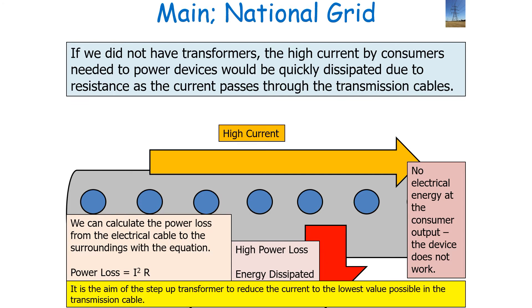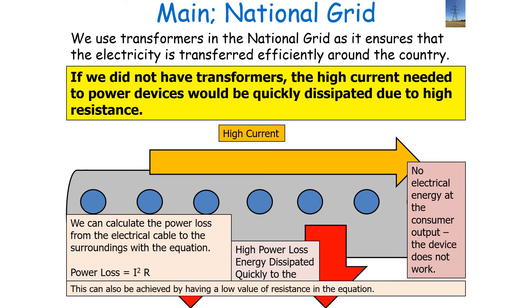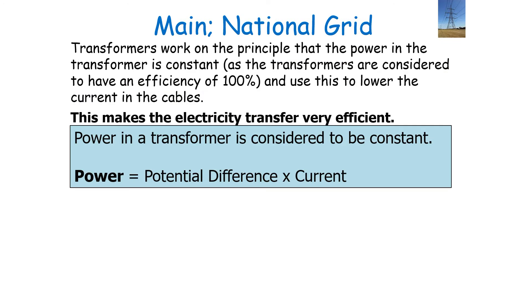It is the aim of the step-up transformer to reduce the current to the lowest possible value in the transmission cable. Note we can also achieve a low value of power loss by having a low value of resistance in our equation, which we can achieve by making the transmission cable out of a low resistivity material. Transformers work on the principle that the power in the transformer is constant, as they have an efficiency of 100%, and we can use this to lower current in the cables to allow our energy transfer to be very efficient.